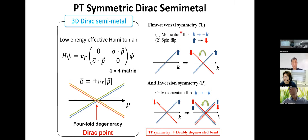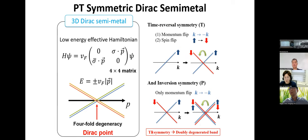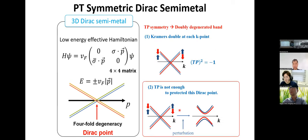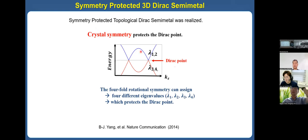In this case, time-reversal and inversion symmetry alone is not enough to protect the Dirac point. Time-reversal symmetry flips momentum and spin, and inversion symmetry flips only the momentum, giving a doubly degenerate band structure. However, PT symmetry alone is not enough to protect the Dirac point, because an additional perturbation will gap the bands. So, to realize the three-dimensional Dirac semimetal, crystal symmetry is very important.